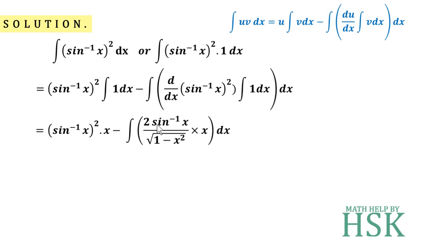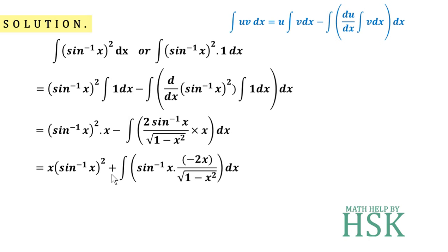On observing this expression, we find that it is a product of two functions: one is the inverse trigonometric function sin⁻¹x, and the second is the algebraic function x/√(1−x²). So I can write this term as x·(sin⁻¹x)², and taking the minus sign with the algebraic expression, I write plus sign here and −2x/√(1−x²) with sin⁻¹x as the first function. We now integrate the product of these two functions by applying integration by parts again.